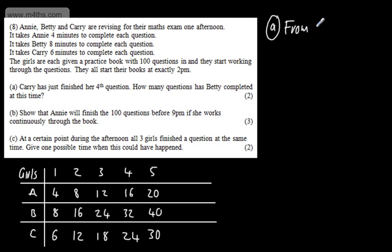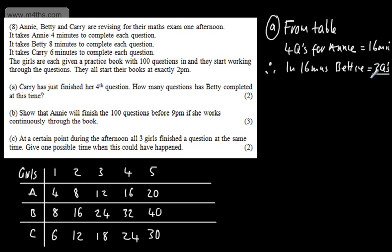So what I'm going to do now, I'm going to write from the table. Four questions for Annie is equal to 16 minutes. Therefore in 16 minutes, Betty will have done two. So Betty now has two questions done. So that's our answer, two questions.